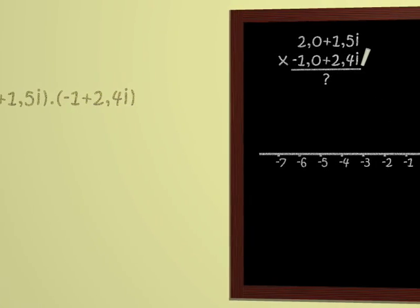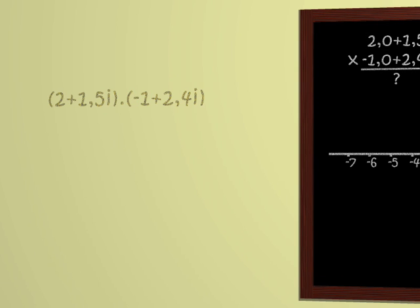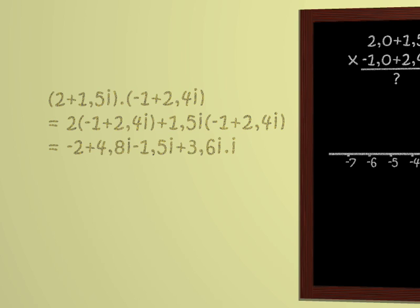We proceed as usual. We first multiply by 2 and then by 1.5i and we add the results. Therefore, we get which is minus 2 plus 4.8i minus 1.5i plus 3.6i times i.